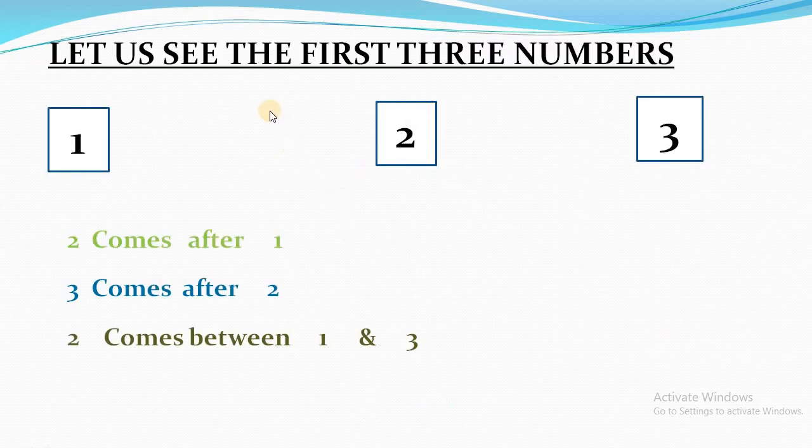Let us see the first three numbers: one, two, three. Two comes after one. Means one, after two. Three comes after two. Means two, after three. Two comes between one and three. Means one, after three.